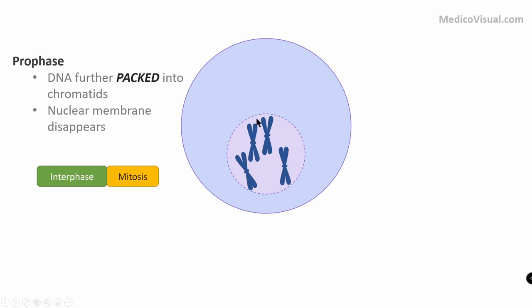Because these two chromatids are exactly alike, we call them sister chromatids. They are attached to each other at the part called the centromere, and this whole structure — two sister chromatids joined at the centromere — is called a chromosome. In prophase, we have two sister chromatids packed together to form a chromosome. Also in prophase, the nuclear membrane starts to disappear so that division of DNA becomes easier.